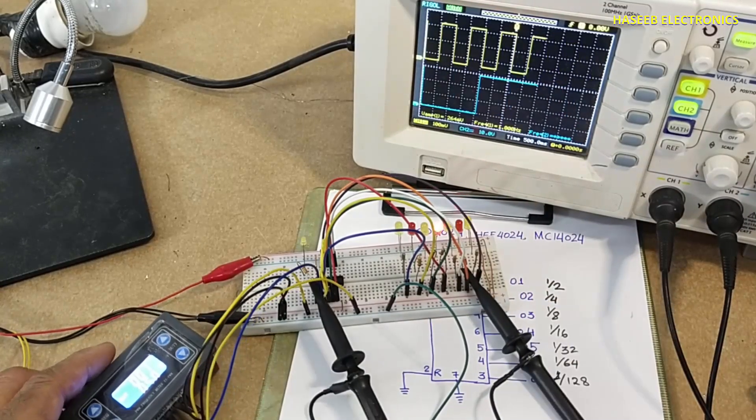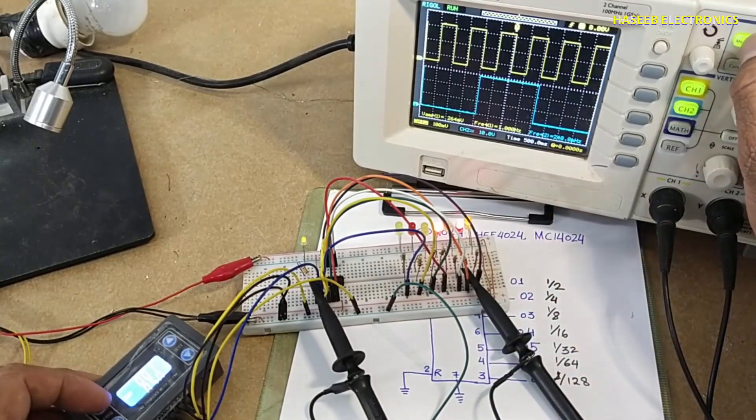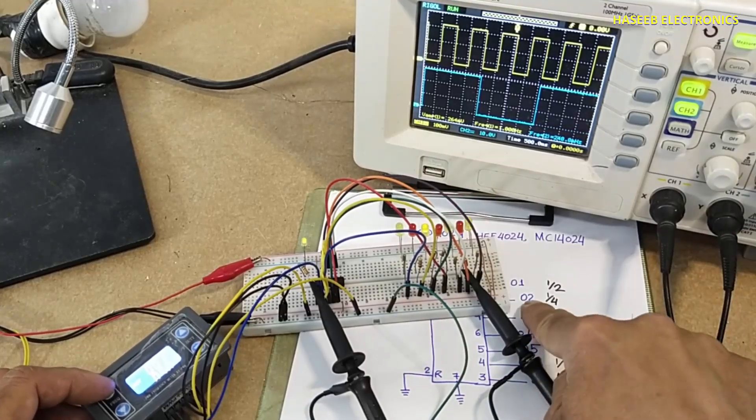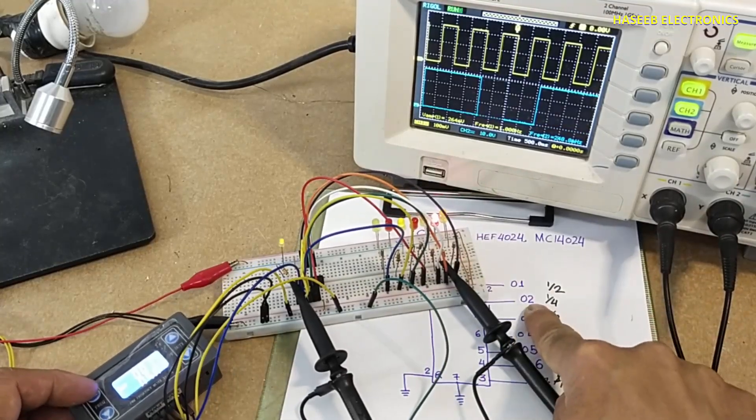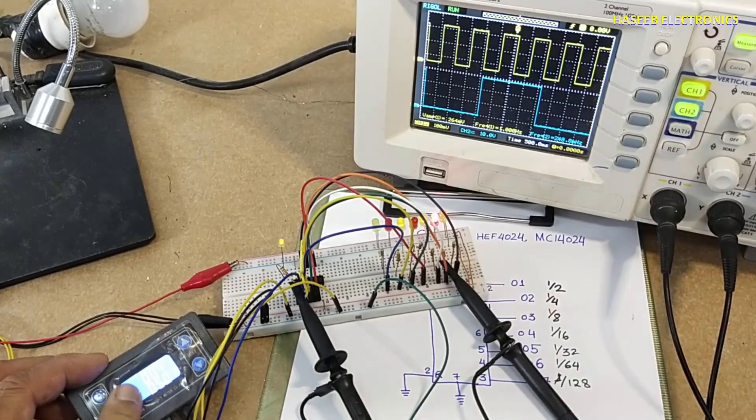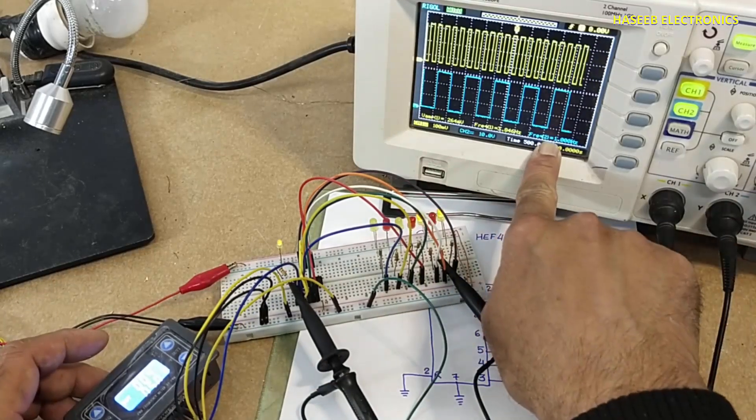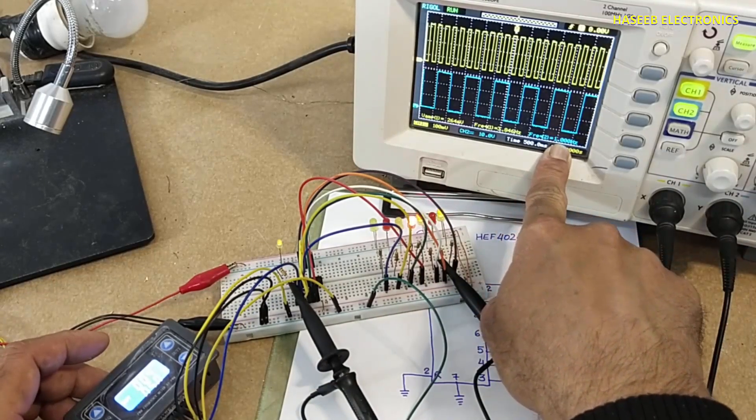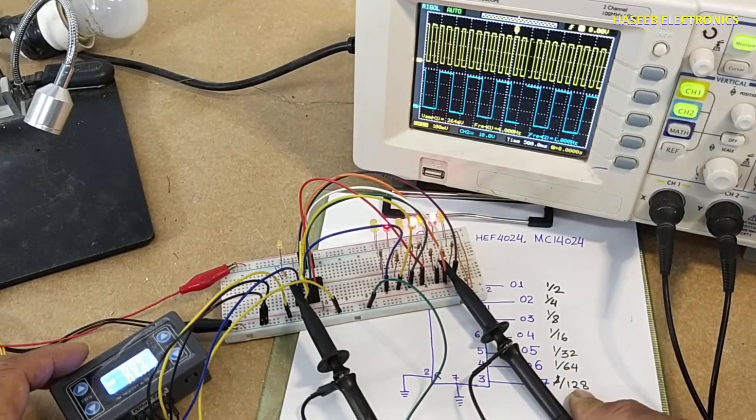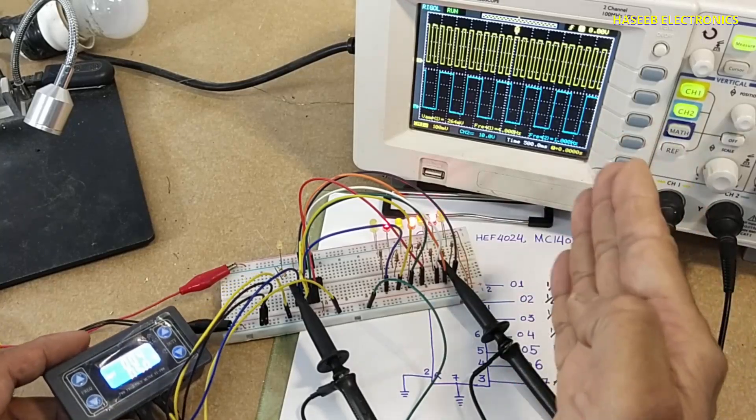For example, if I provide 4 hertz frequency at input, that means we will receive divided by 4 - 1 hertz. 4 hertz signal. Yes, output frequency at output number 2. Let me set frequency at 128 hertz so that we will monitor stepwise division.